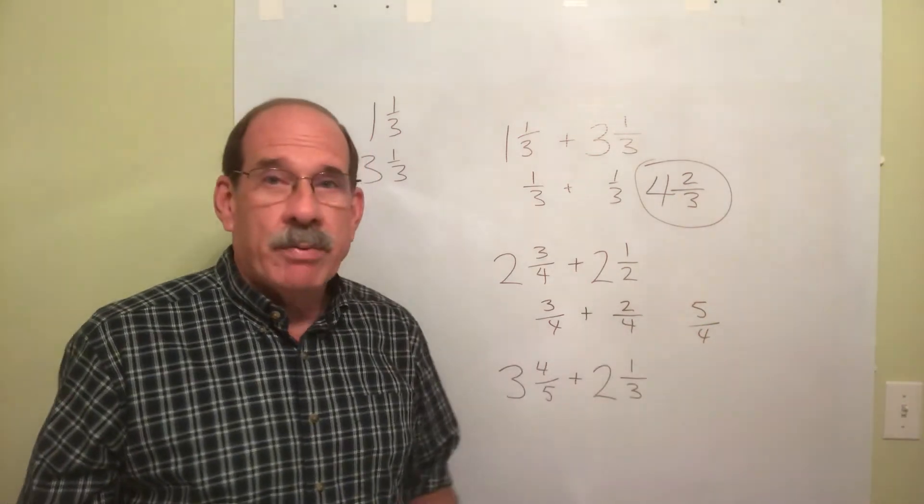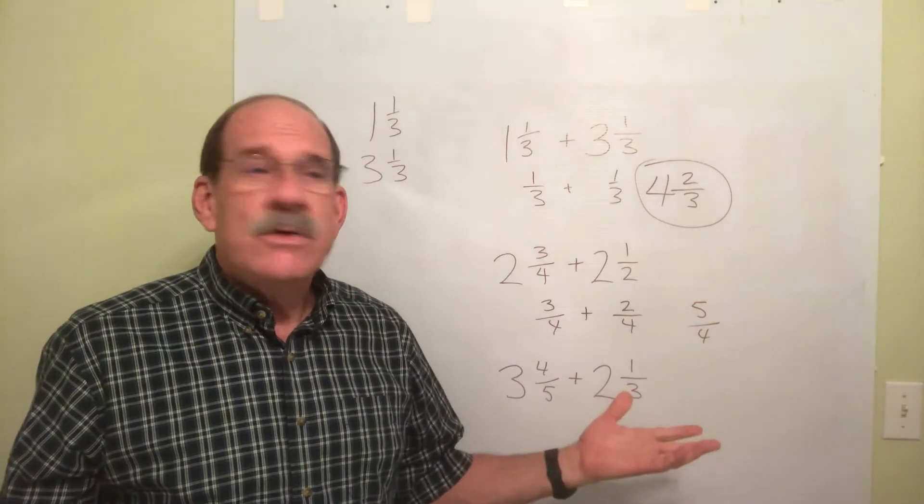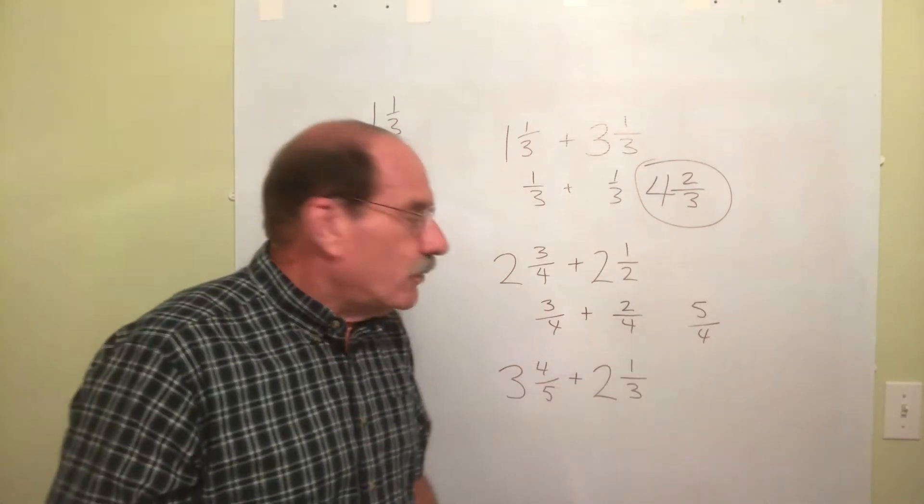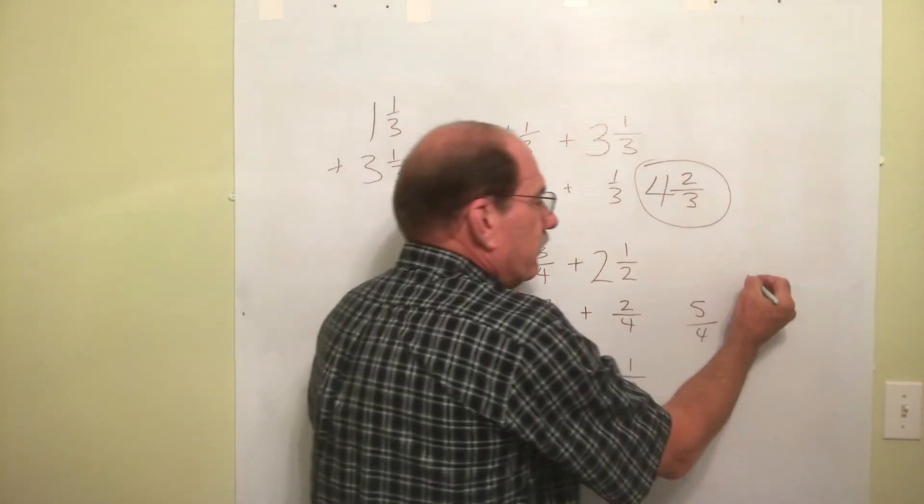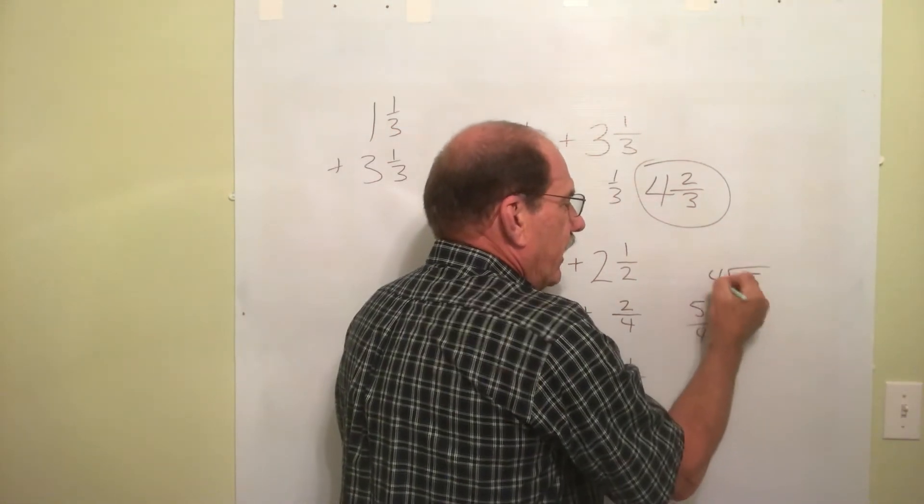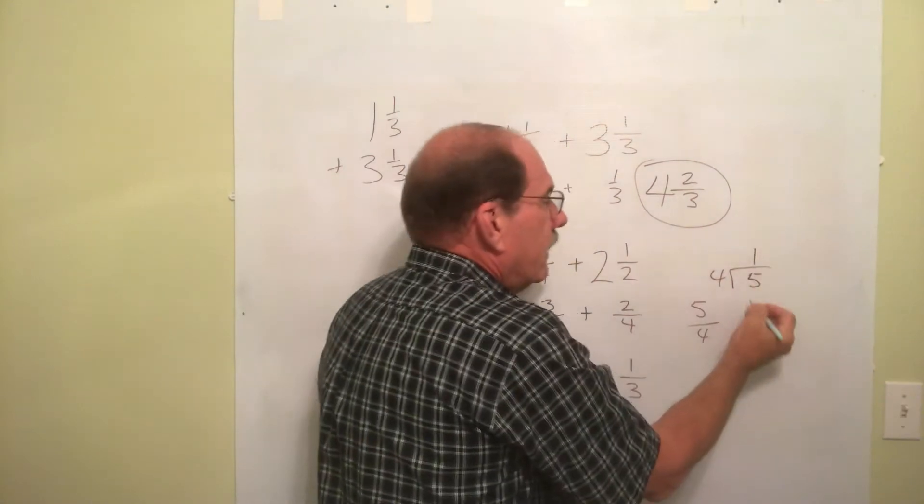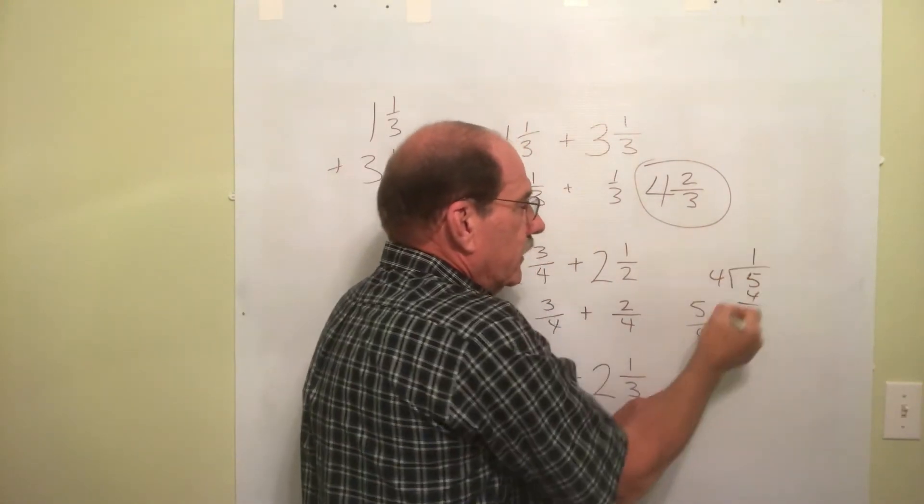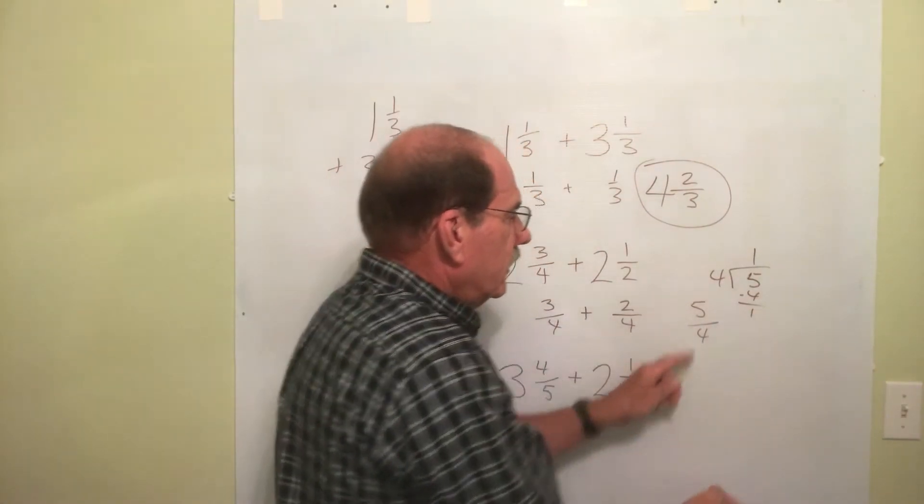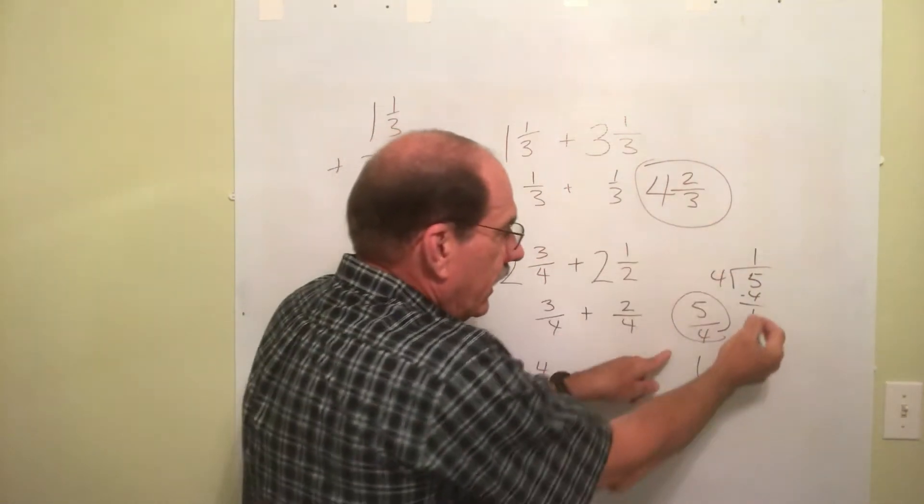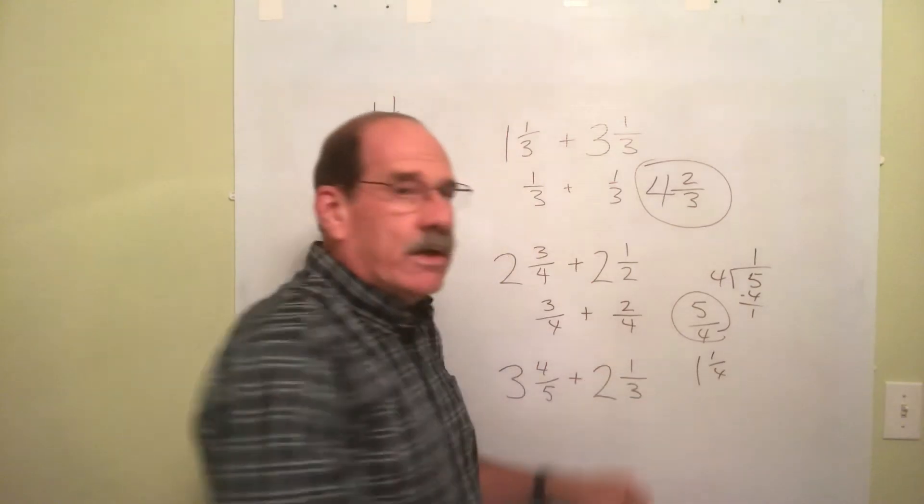We must convert our improper fraction into a mixed number. So let's see, 5 fourths, and if you want to see it done, actually, you know, 5 divided by 4. Well, 4 goes into 5 one time. That makes a 4. 1 times 4 is 4. Subtract that. So this becomes 1, and the left over here, 1 and 1 fourth.